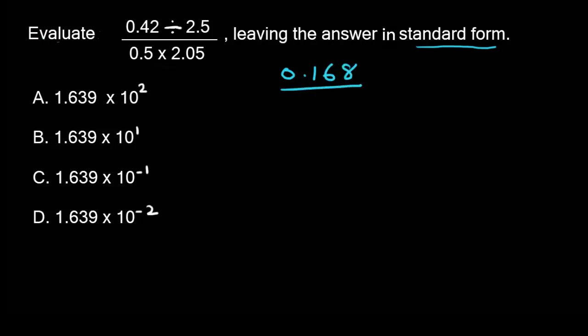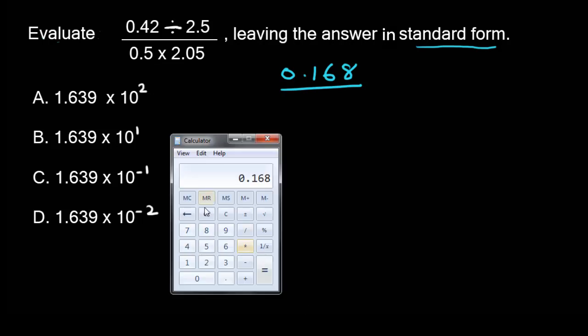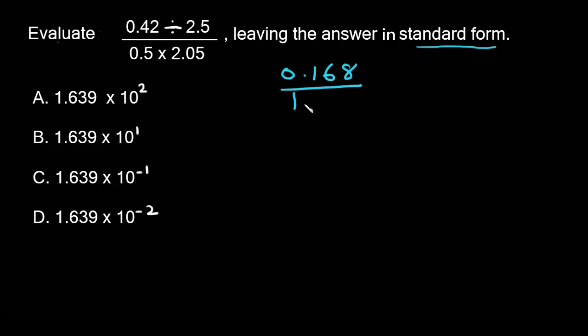To be divided by this, let us use a calculator to solve this as well. We have 0.5 times 2.05. That is what we got: 1.025.